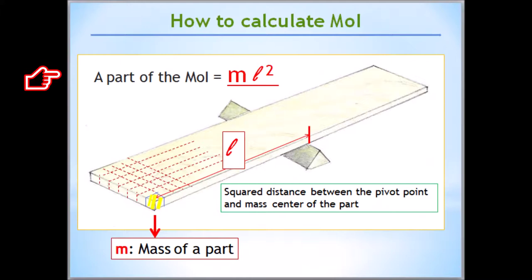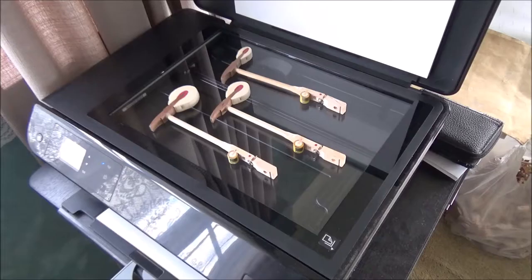To get moment of inertia of an object, we calculate mass of a part, multiplied by the squared distance between the pivot point and mass center of that part, and then add up all parts within this object.